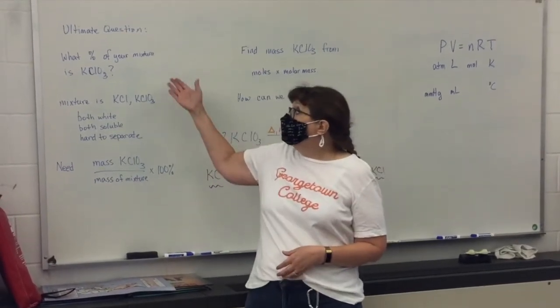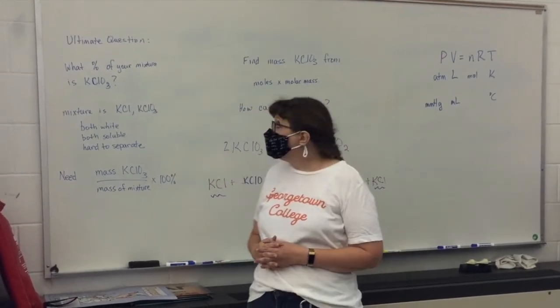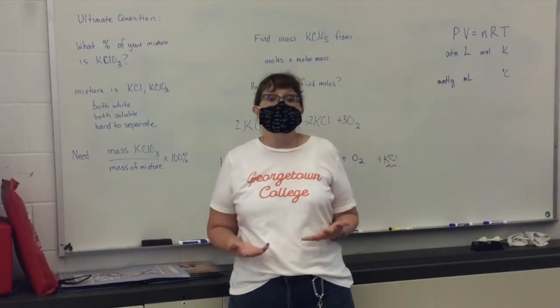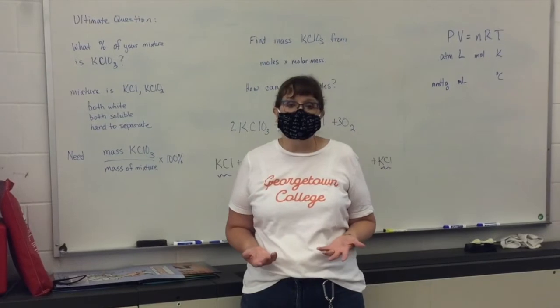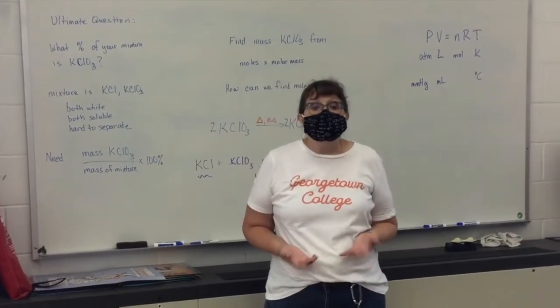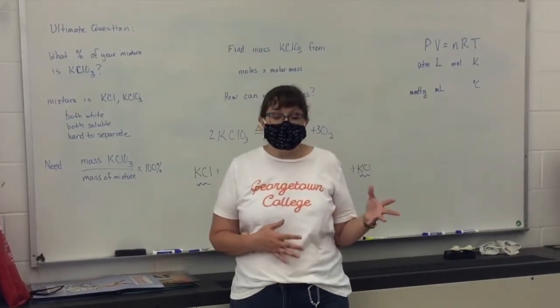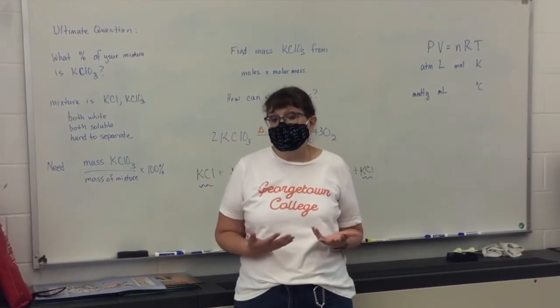We want to know what percent of your mixture is potassium chlorate. Potassium chlorate is mixed in with potassium chloride and both of these are white and both are soluble, so it's not easy to separate these either visually or by some physical process. So what we're going to have to do is do a chemical reaction. We're going to change the potassium chlorate into potassium chloride and oxygen and measure the oxygen.